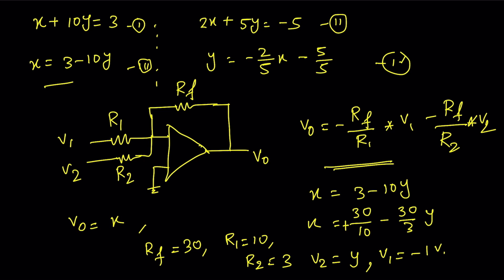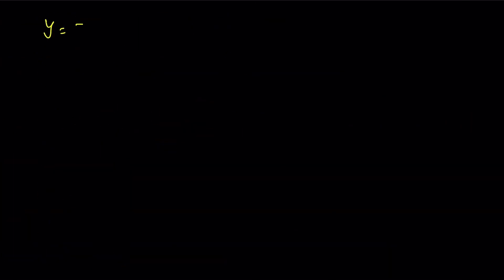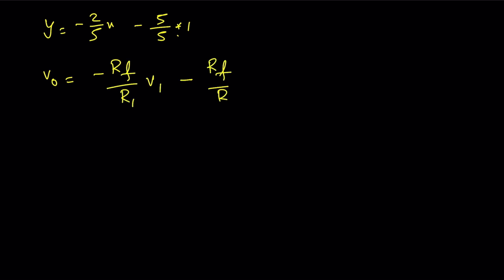Now go to equation 4: y = (-2/5)x - (5/5). There is one problem here. In the adder output formula, the numerator Rf is the same for all terms. But here we have 2 and 5 as numerators for the two terms. So we need to change the numerator. We can rewrite equation 4 as y = -(2/5)x - (2/2)·1.